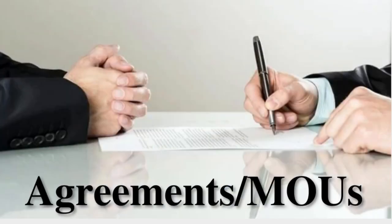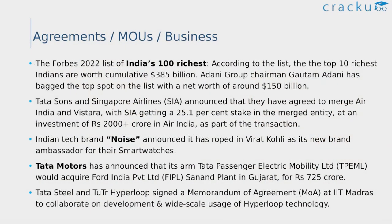Now let us see some agreements and MOUs of December 2022. According to the Forbes 2022 list of India's 100 richest, the top 10 richest Indians are worth a cumulative 385 billion dollars. Adani Group chairman Gautam Adani has bagged the top spot on the list with a net worth of around 150 billion dollars. Indian tech brand Noise roped in Virat Kohli as its new brand ambassador for their smartwatches.